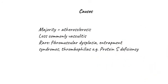Any disease process affecting the arteries, whether large or small, may ultimately result in chronic limb-threatening ischemia. The vast majority are due to atherosclerosis of the larger arteries. Less commonly, vasculitis of the small to medium arteries may be the trigger. On rare occasions, other conditions such as fibromuscular dysplasia, entrapment of the popliteal artery, or rare thrombophilias resulting in repeated embolization and thrombosis in situ can lead to CLTI. By far the most common pattern is a cigarette smoker with atherosclerosis of the large vessels.